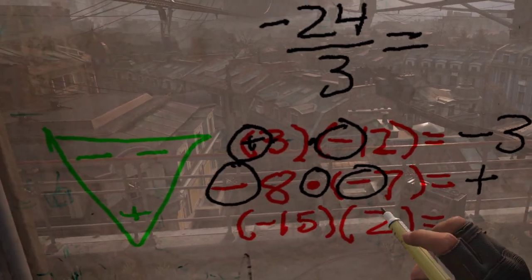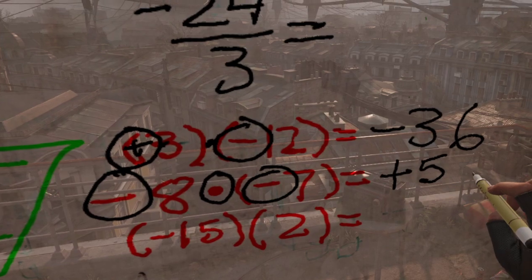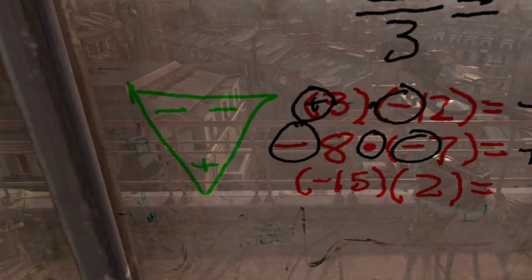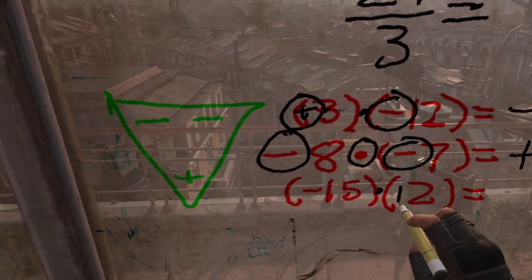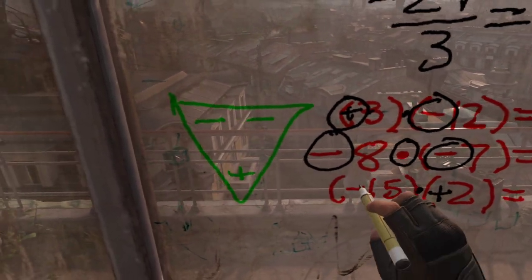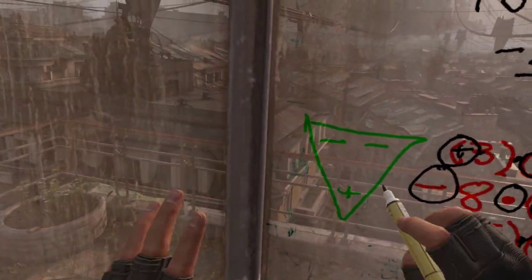The product of 8 and 7, which is 56. And then the last one, we have a negative 15 times a positive 2. So that's a negative times a positive. Over here you got a negative and a positive.